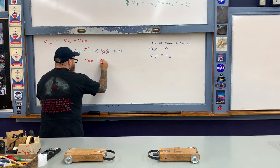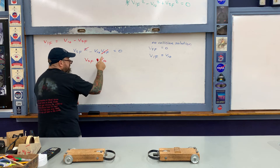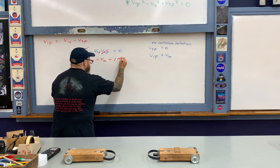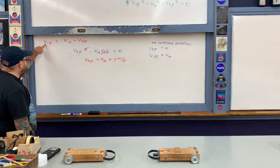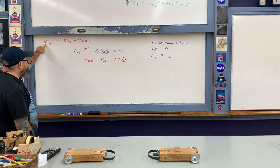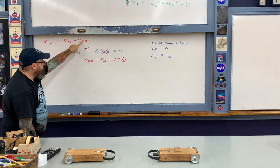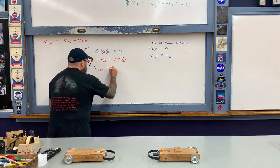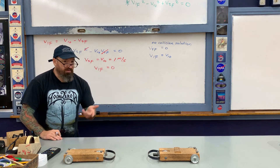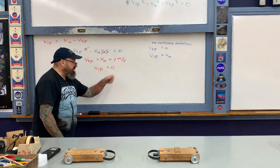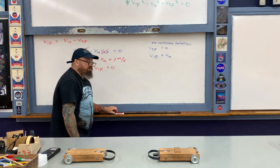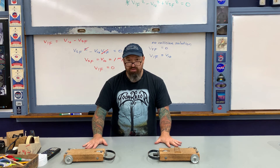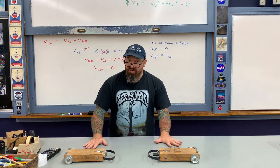Solving for the other solution by canceling a v2_final from each term: the final velocity of the target equals the initial velocity of the incident particle — that is, v2_final = 1 m/s. Then v1_final = v1₀ − v2_final = 1 − 1 = 0 m/s. The incident particle comes to rest and the target particle moves off at one meter per second.